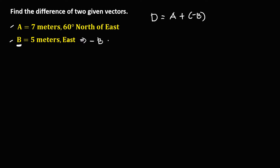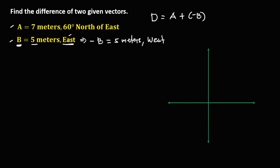Negative B equals — copy the given distance, 5 meters, then find the opposite direction. So the opposite of east is west. Then plot this in a plane: north, south, east, and west. Then for vector A,